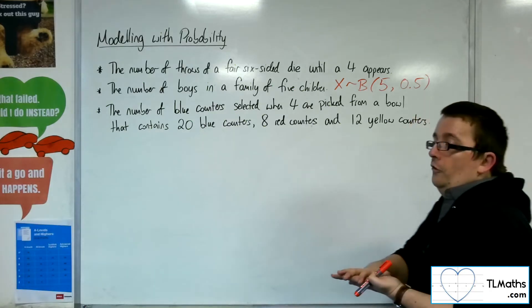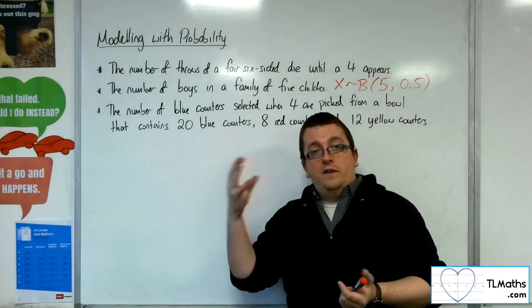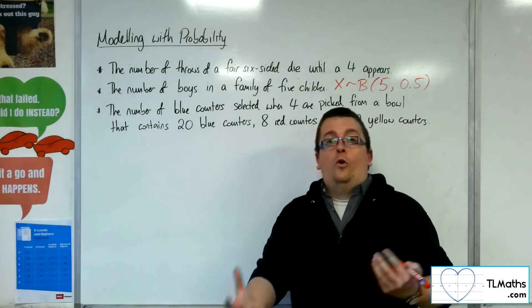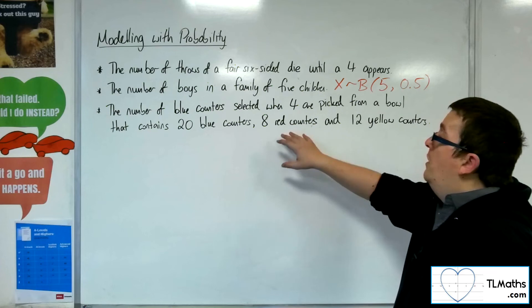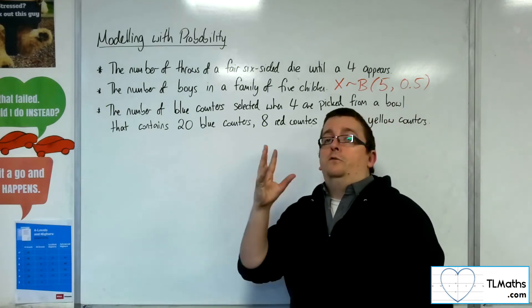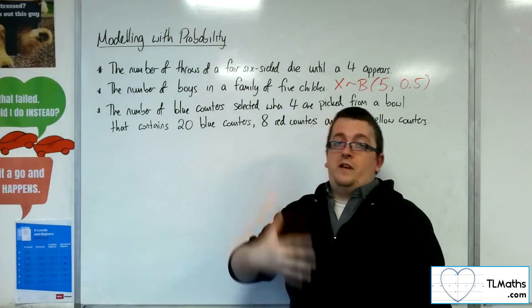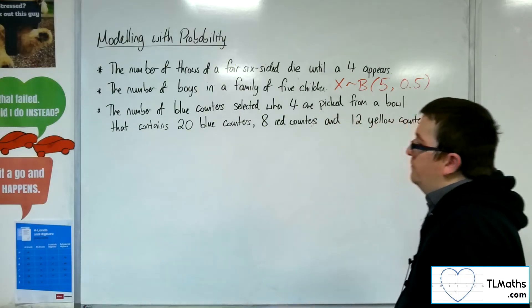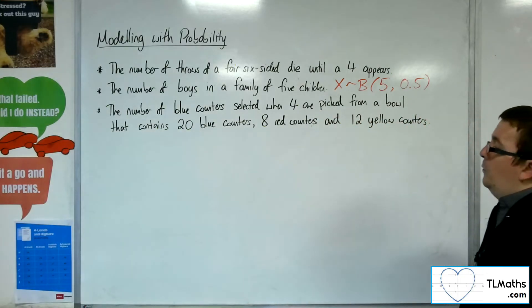Each trial should be success or failure. So we either get a blue counter or we don't. The fact that there are red counters and yellow counters doesn't matter. We could just look at it as blue counters and not blue counters. So success and failure work that way.